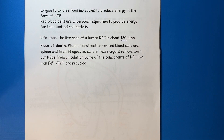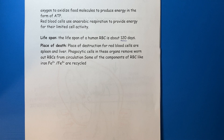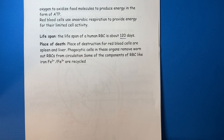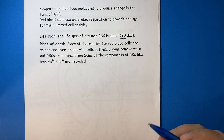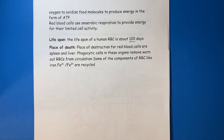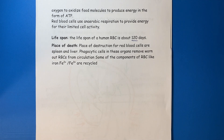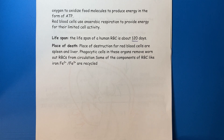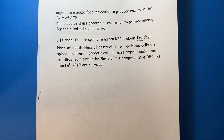Phagocytic cells in these organs remove worn-out red blood cells from circulation. Some of the components of the red blood cells are recycled, like iron and heme.